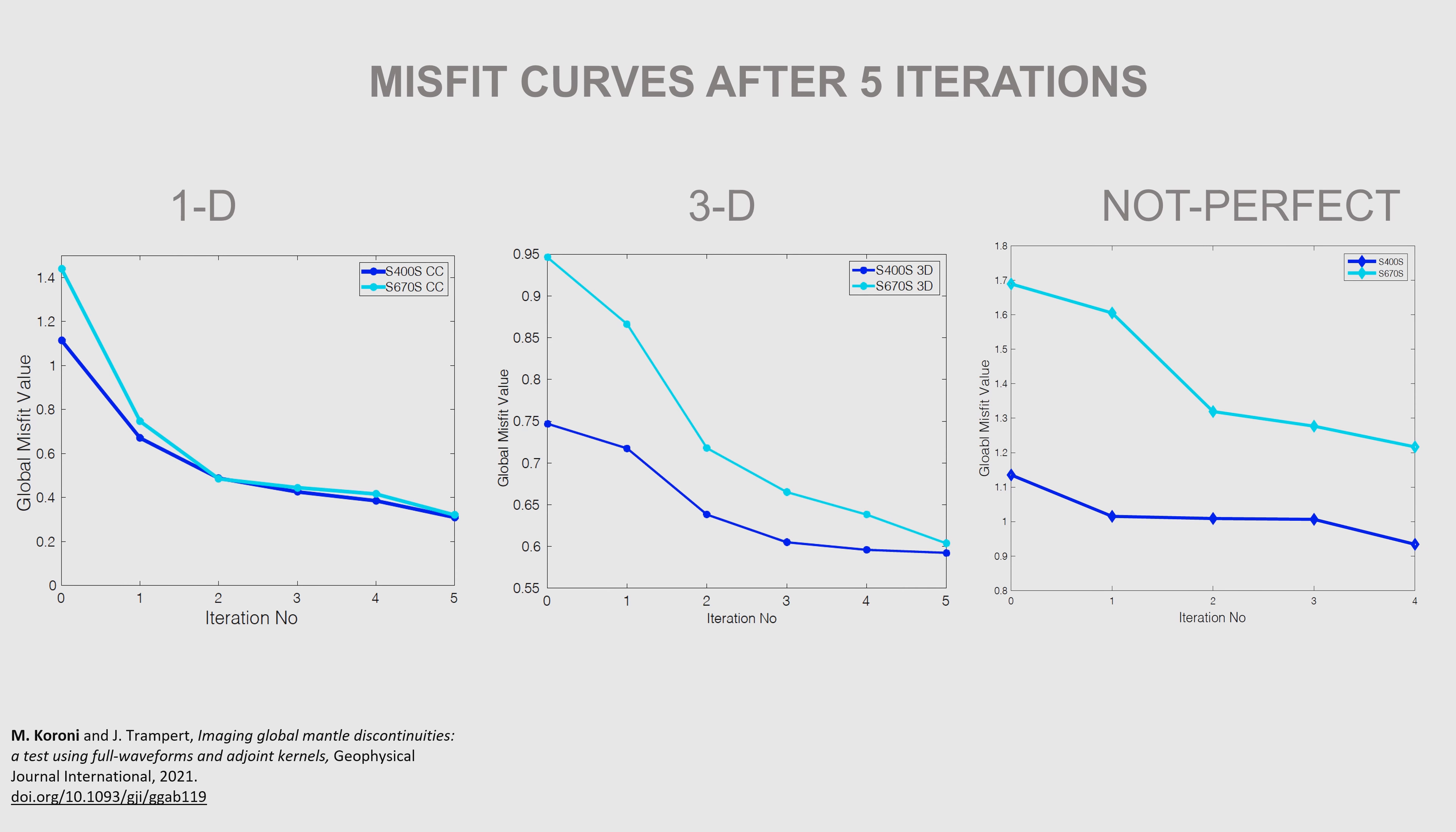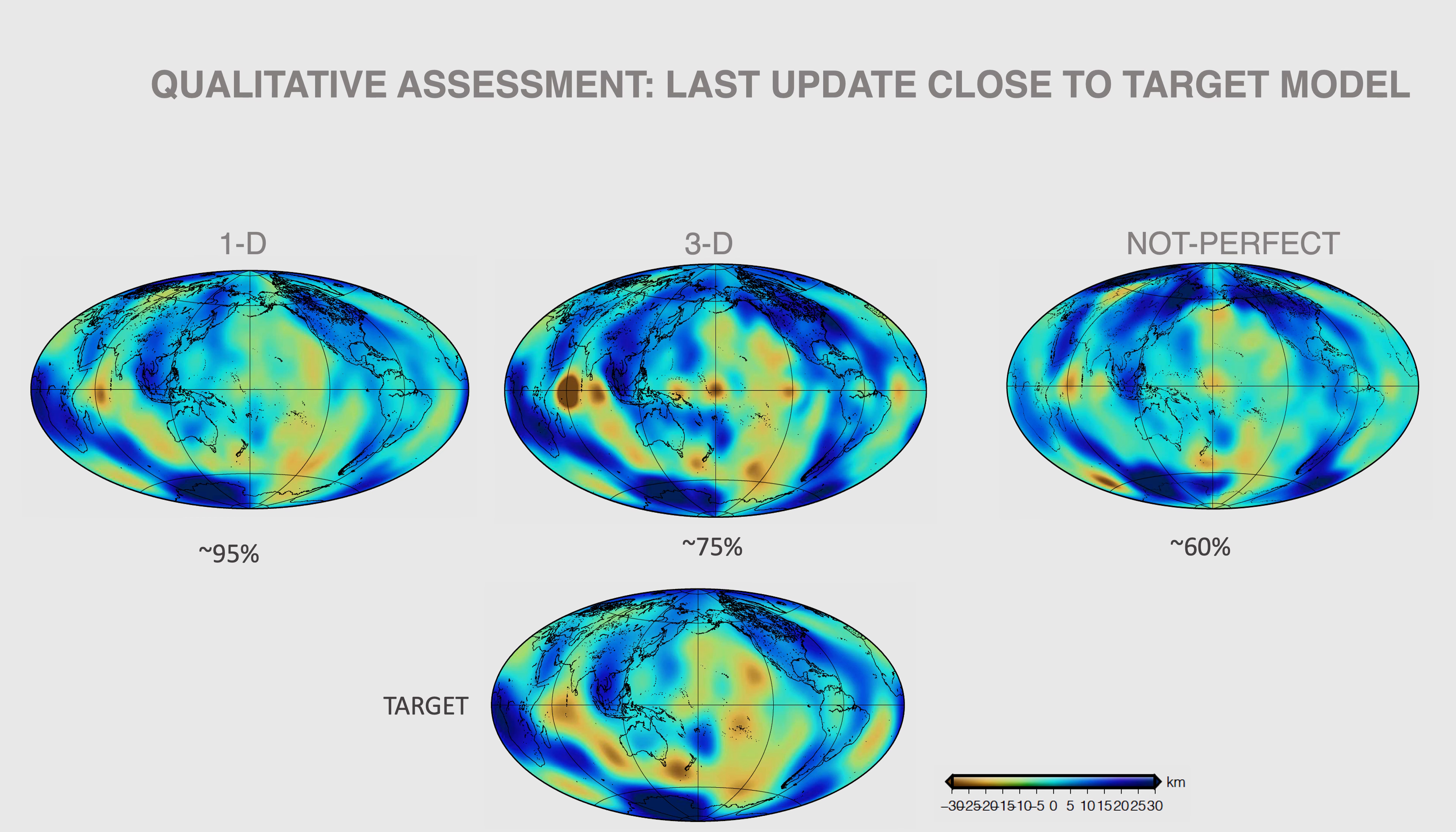After five steps of steepest descent direction, the recovery of the target model is very good for all cases, shown by lower misfit values. We also see that for perfect knowledge of velocity, the retrieval is 95% in a 1D background and 75% in a 3D background.